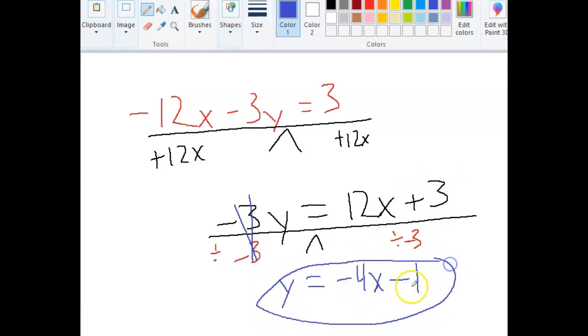And this is my equation of a line. It's in slope-intercept form. This number right here is the slope, negative 4. This is the y-intercept, negative 1, or the point 0, negative 1.